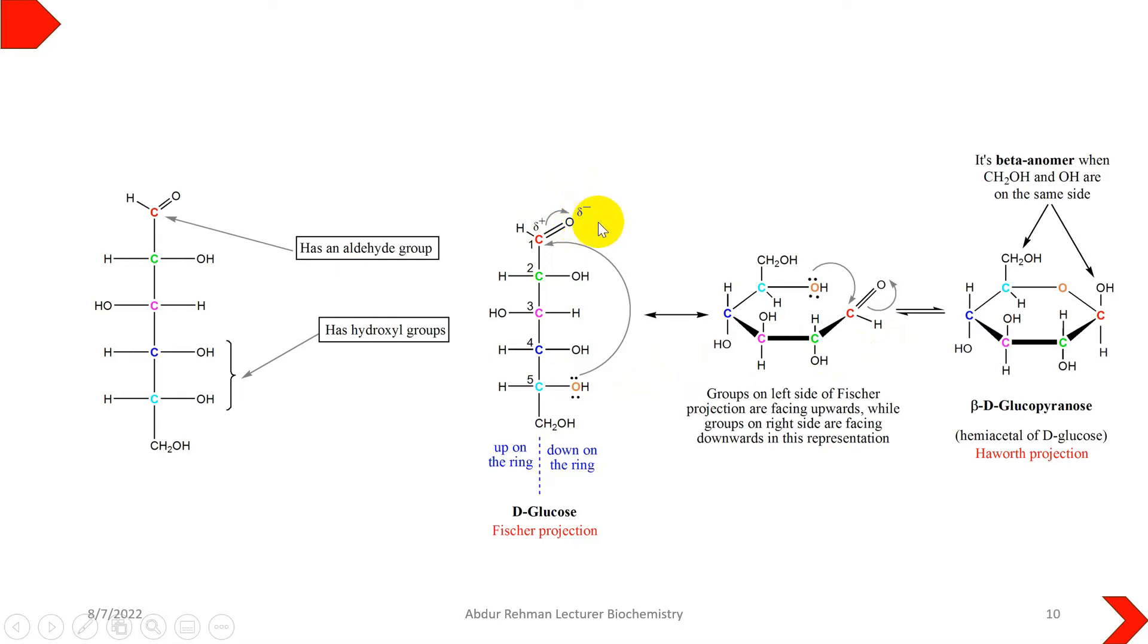The hydroxyl group in linear structure, if on the right side, will be represented downward on the ring, and those on the left side will be up on the ring. So if we look at this cyclic structure, the hydroxyl group at carbon number two is downside because in linear structure it was on the right side.